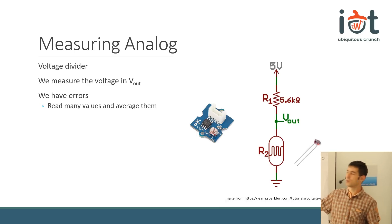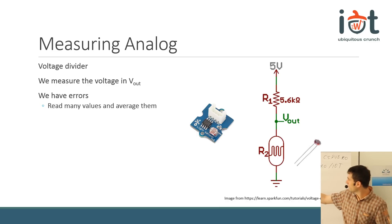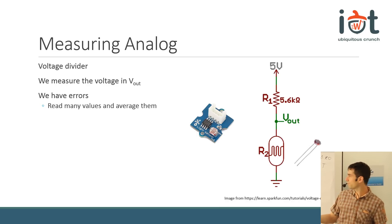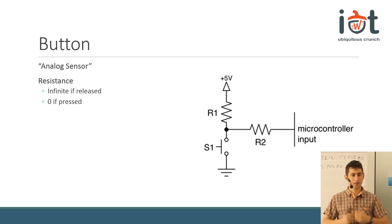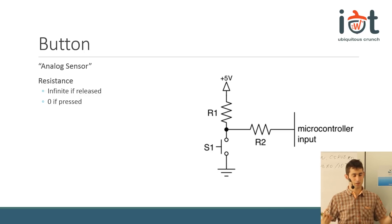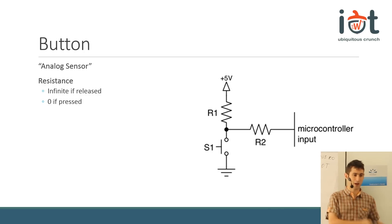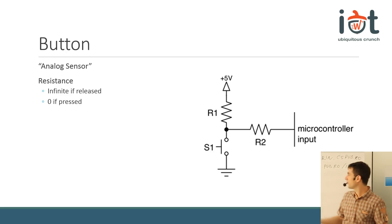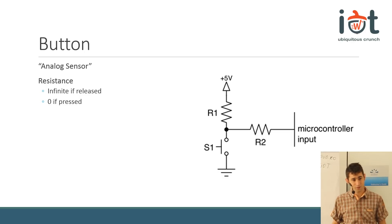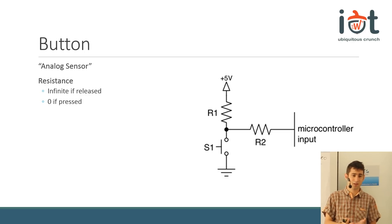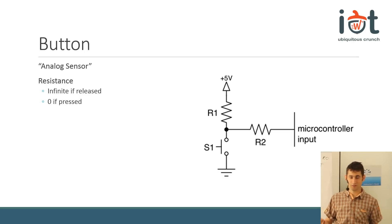We always measure Vout in the voltage divider. The button is one of the simplest sensors you can connect, and it's the one that people usually connect really badly. In fact the button is an analog sensor - it can just report two values: either one or either zero.